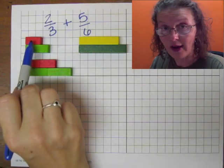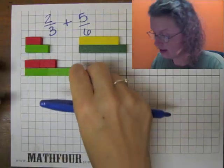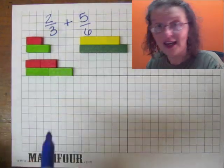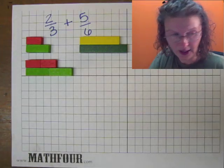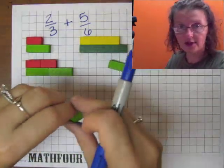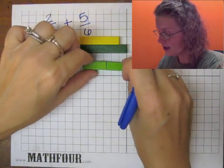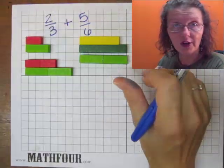So instead of one red and one light green, I do two reds and two light greens. I chose the light green because two light greens make one dark green.